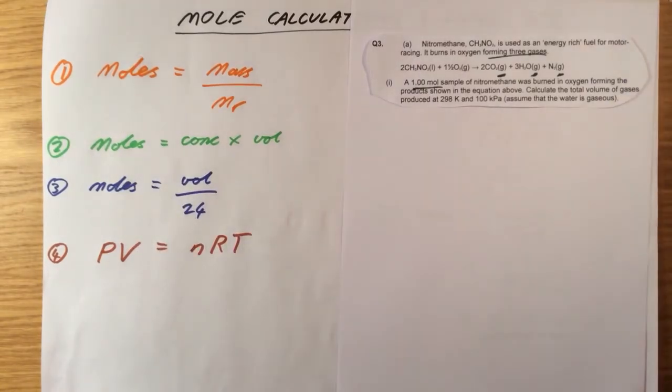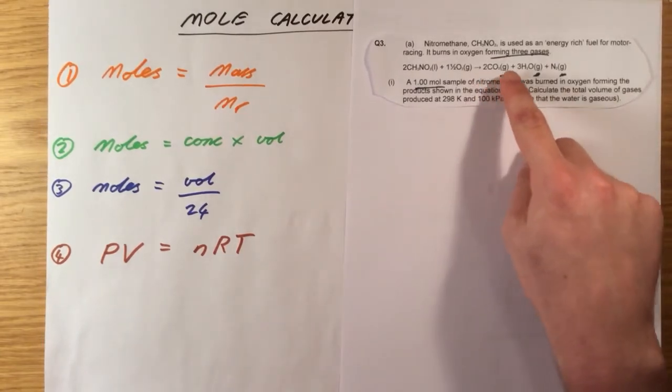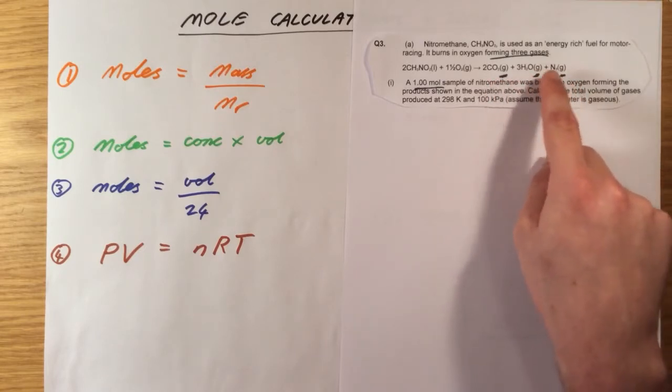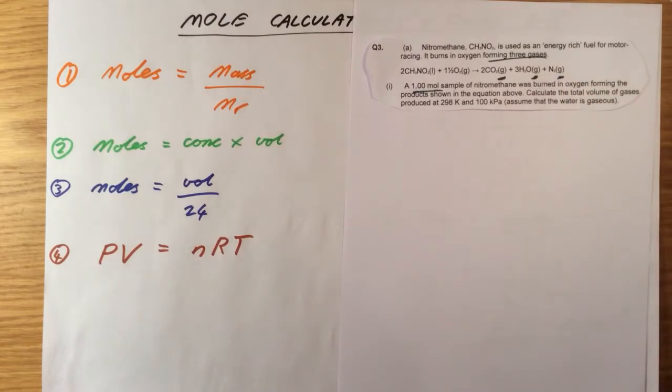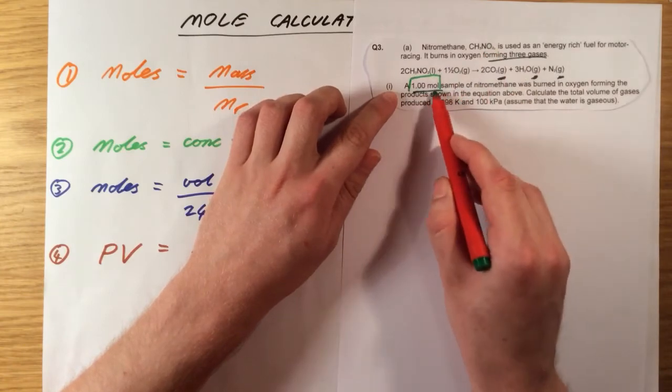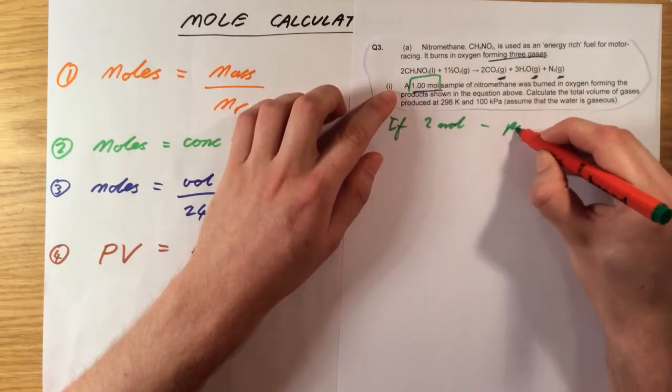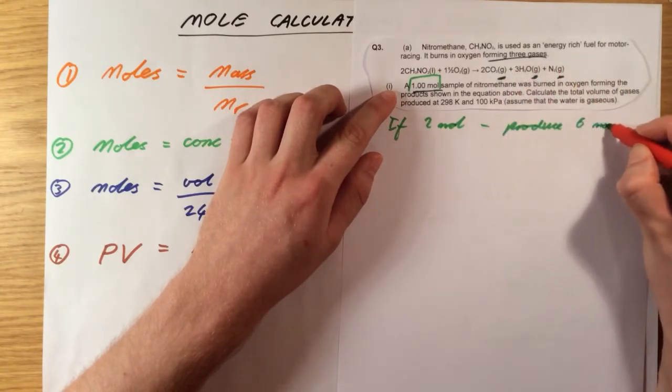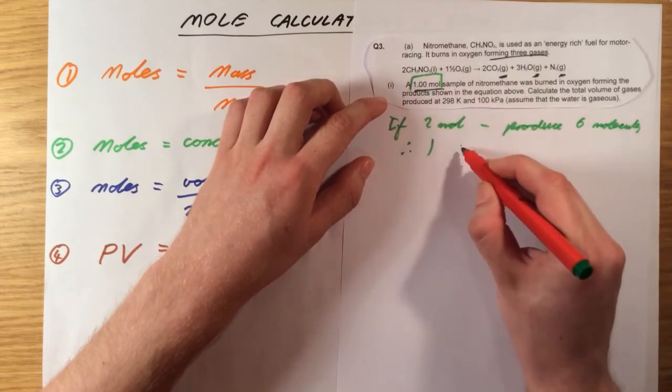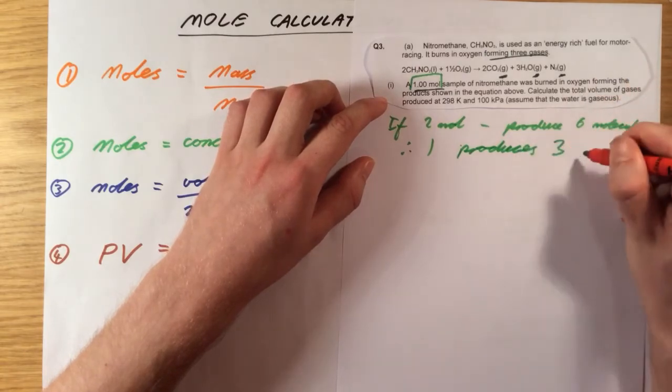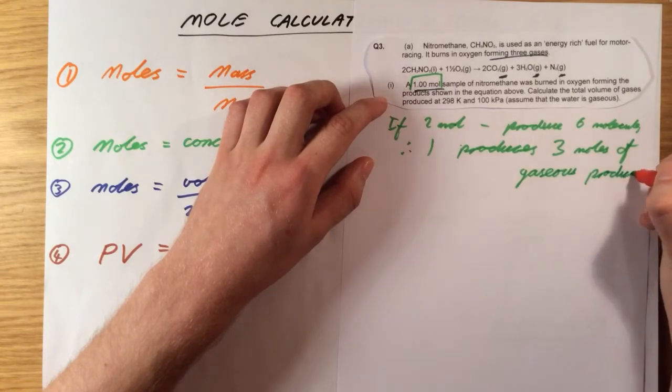So there's a few tricks here, and there's also two ways we can approach this question. The first one is that it wants a total volume of gases. Therefore, we need to consider the fact that we've got two moles of CO2, three moles of gaseous water, and another mole of nitrogen. So in total on the right-hand side, if we were reacting two molecules of nitro-methane, we would produce three, four, five, six molecules on the right-hand side. However, this is the part which is going to catch us out. We want a one mole sample. So if we had two moles of nitro-methane, we would produce six moles of molecules. But we don't, we've only got one. So therefore, one mole of nitro-methane will produce three moles of products.